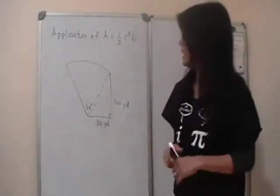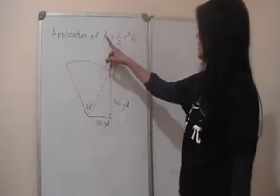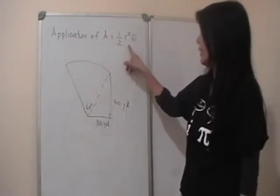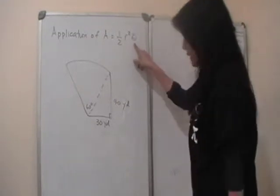Now let's look at an application of the formula for the area of a circular sector. We said that area is half R squared theta. Again, we want theta to be in radians - it's a central angle.